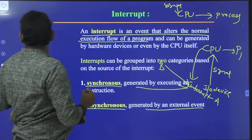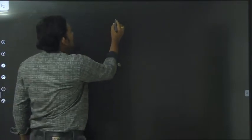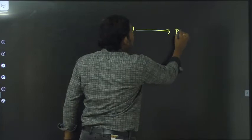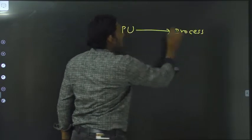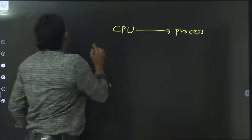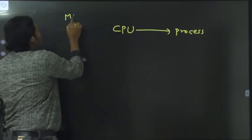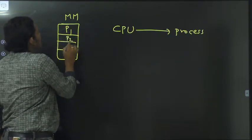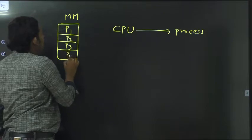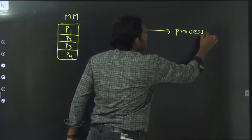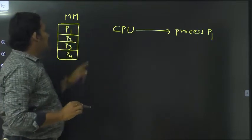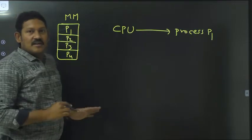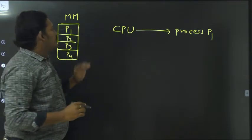For clear understanding, let's look at what an interrupt is visually. The CPU is executing a process — this is the normal event. Inside the main memory, suppose we have different processes: P1, P2, P3, P4. The CPU is executing P1. After completion, it will go to P2, then P3, then P4. This is what happens in the normal flow of execution.